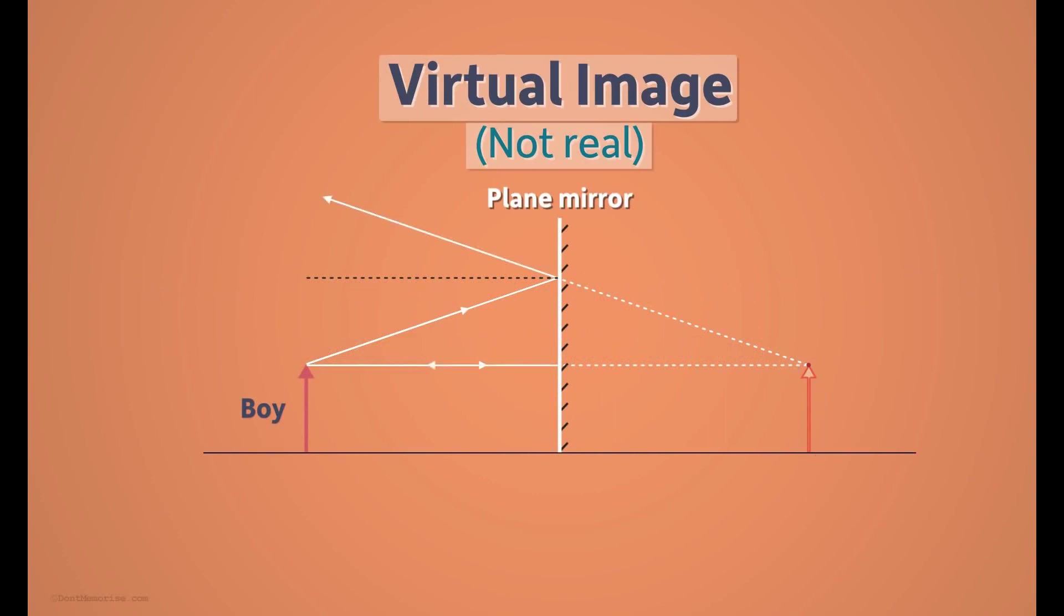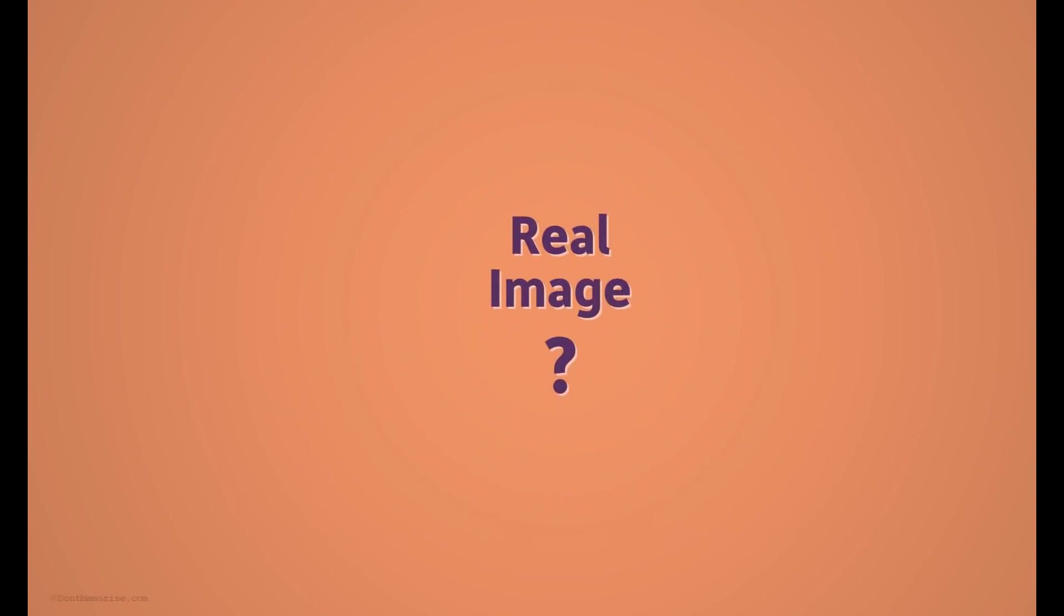Every plane mirror forms a virtual image. This is the first characteristic of the images formed by plane mirrors. Images formed by plane mirrors are virtual and not real. So what is the real image then, and how are they formed?